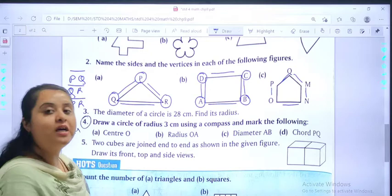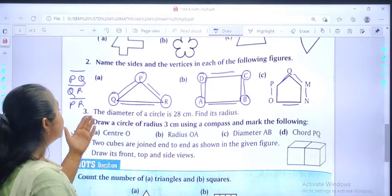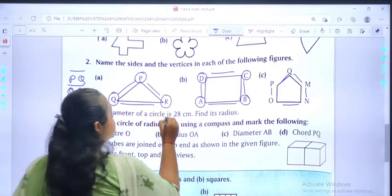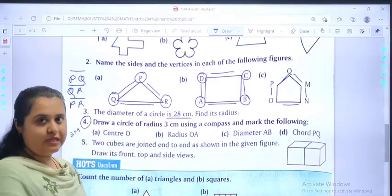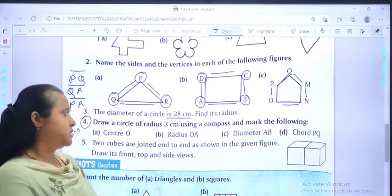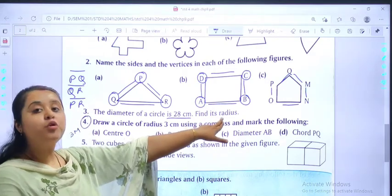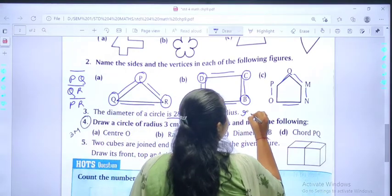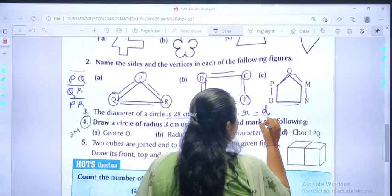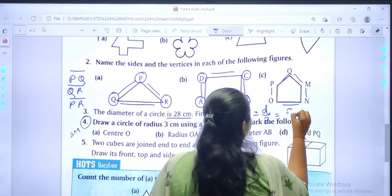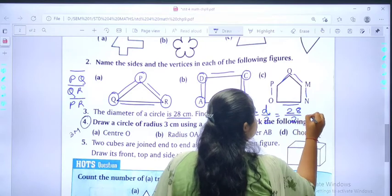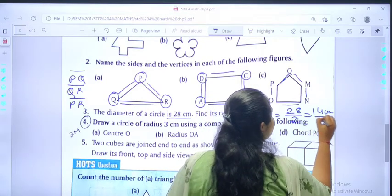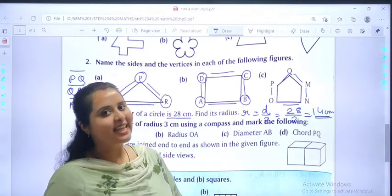Let's move to question number 3. The diameter of a circle is 28 centimeters. The diameter is 28. We are supposed to find the radius. So, you know the formula. Radius equals to diameter upon 2. 28 upon 2. So, the radius will be 14 centimeters. That's easy.